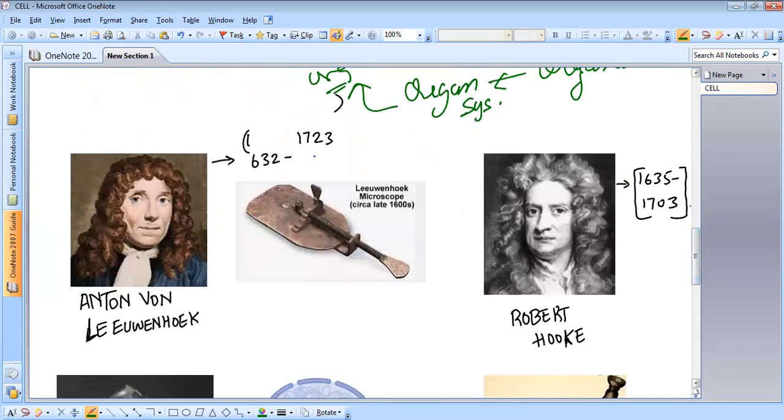Now, we know what are cells, we know what are unicellular organisms, we know what are multicellular organisms. Now we talk about how was cell discovered.